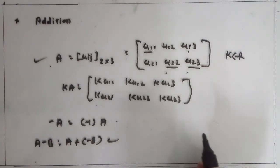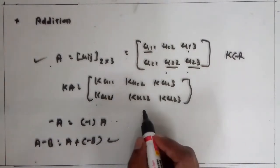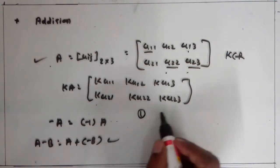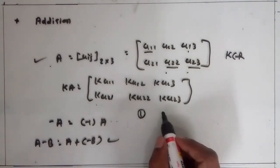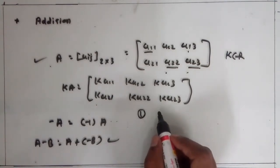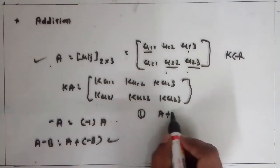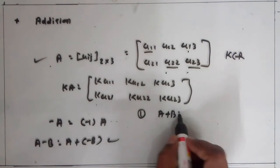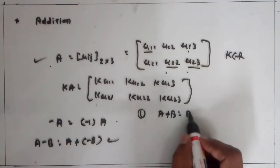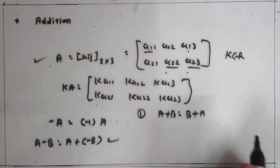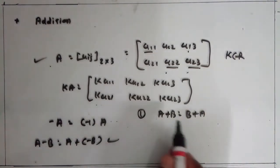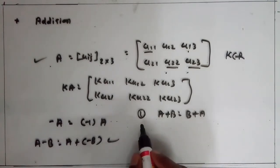Now, properties of matrix addition. Remember these properties. Property one: the commutative law. A plus B is equal to B plus A. You know about this commutative law.